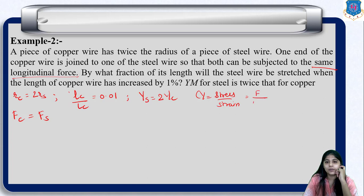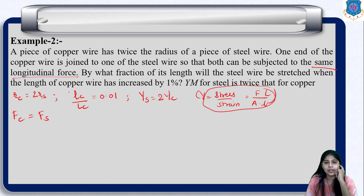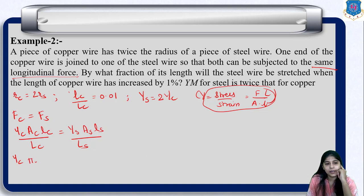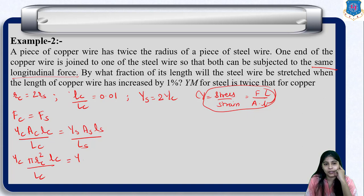Young's modulus can be written as stress upon strain, which is force upon area divided by change in length upon L. Using this equation we write: FC = YC × AC × δLC / LC. Similarly, FS = YS × AS × δLS / LS.